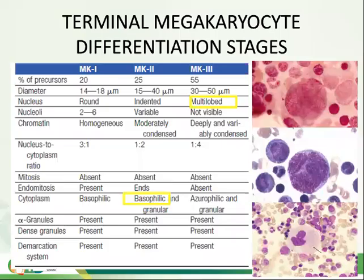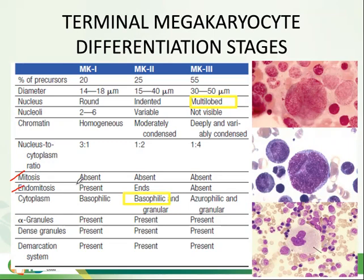To summarize the terminal megakaryocyte differentiation stages: mitosis is absent in MK1 through MK3. Endomitosis is present in MK1 (megakaryoblast) and ends at MK2 (promegakaryocyte), and is already absent in MK3. The demarcation system is present in all of them, similarly with your alpha granules and dense granules, which will be discussed further when we reach platelet ultrastructure.